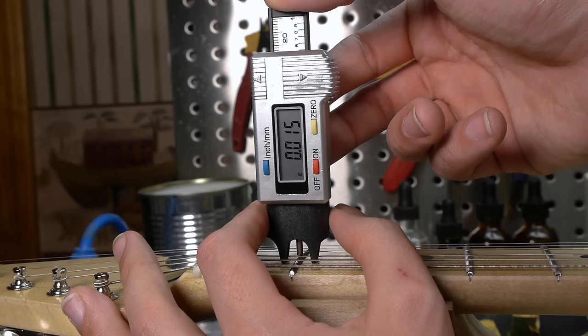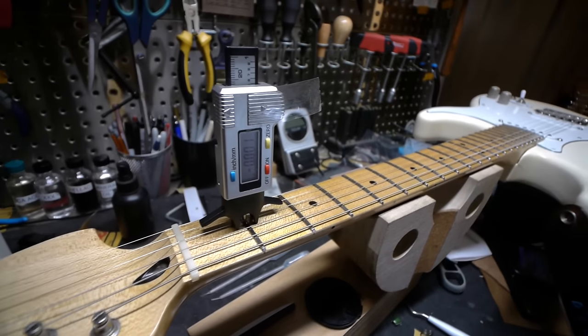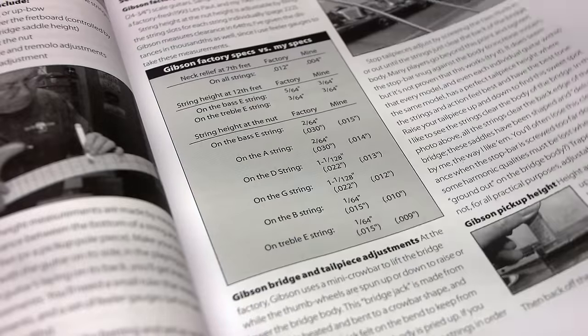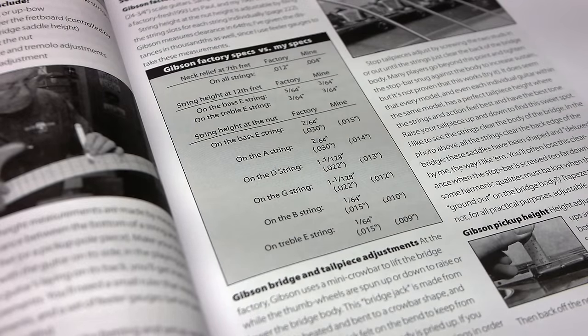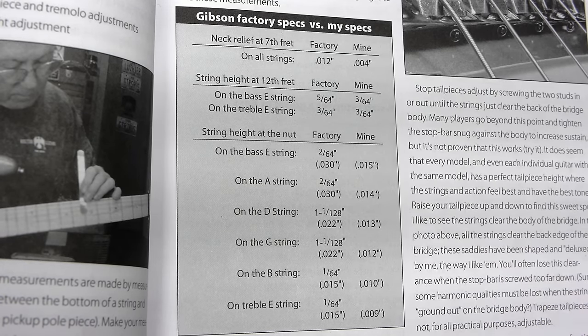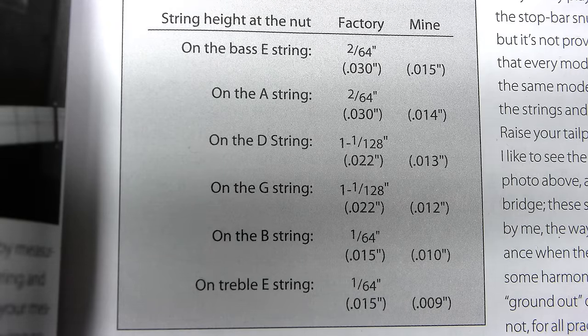The measurements I came to with the neck just about dead straight are fifteen thousandths on the three bass strings and nine thousandths on the three treble strings. These are the same specs that Dan Earlywine uses in the Guitar Player Repair Guide, and I would certainly never go any lower than this. Shooting for several thousandths higher will provide a nice safety margin and will still result in extremely low action compared to factory specifications.